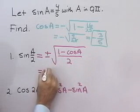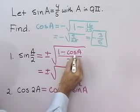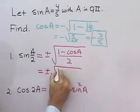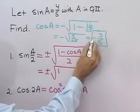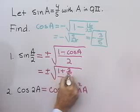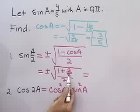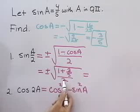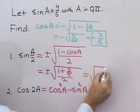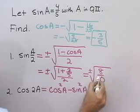Back to my original problem here. This is going to be plus or minus square root of 1 minus cosine A, and here I have cosine A, so 1 minus negative three-fifths, so 1 plus three-fifths, all divided by 2. Now, let's see, this is five-fifths plus three-fifths, that's eight-fifths divided by 2 is going to be plus or minus square root of eight-tenths.